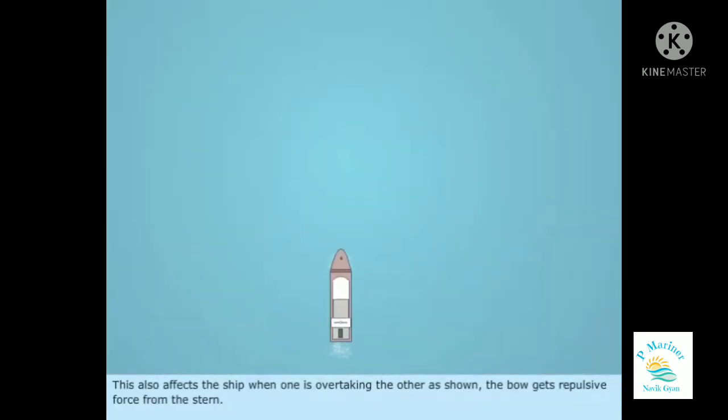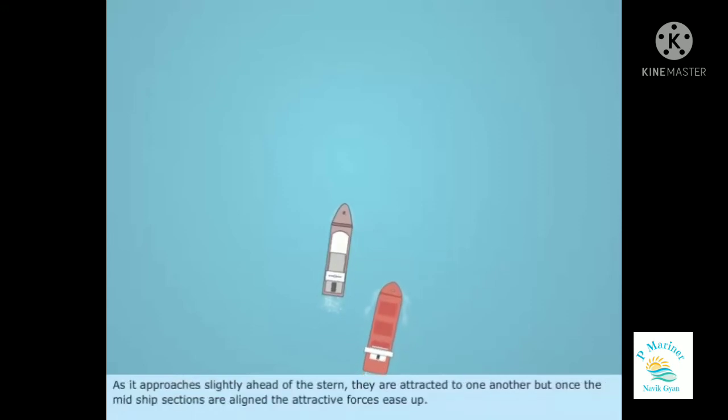This also affects the ship when one is overtaking the other as shown. The bow gets repulsive force from the stern. As it approaches slightly ahead of the stern, they are attracted to one another.